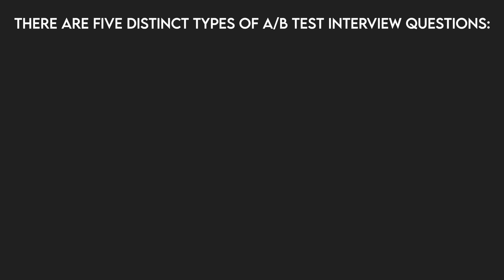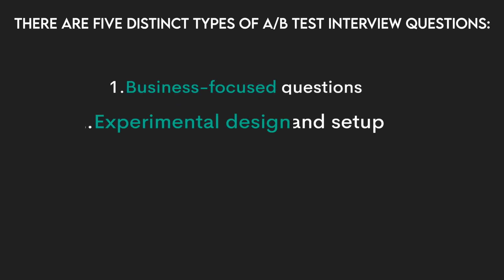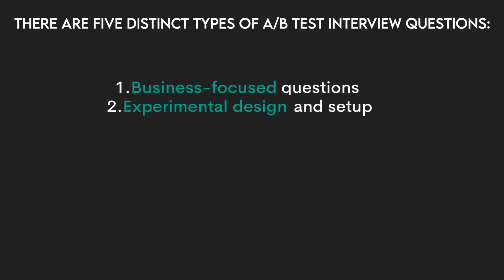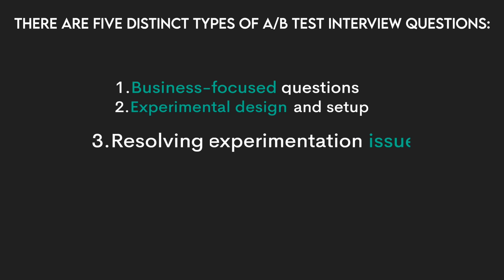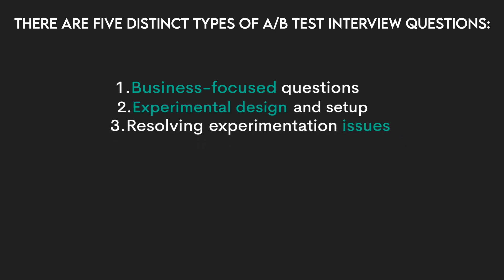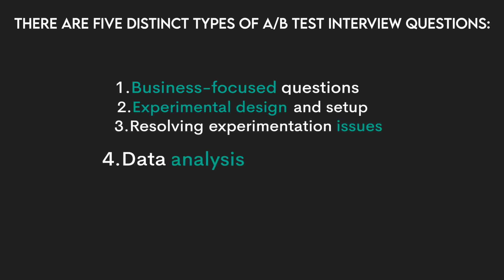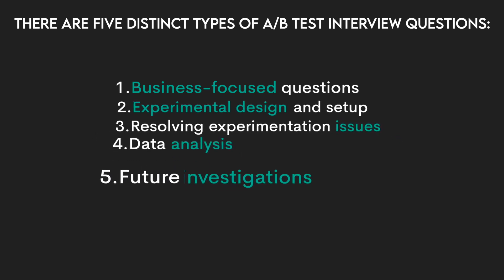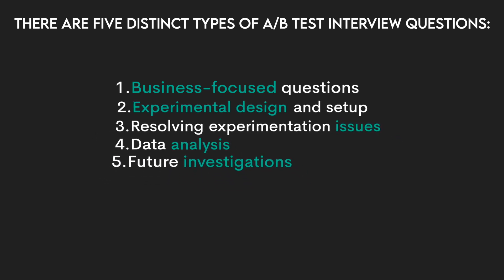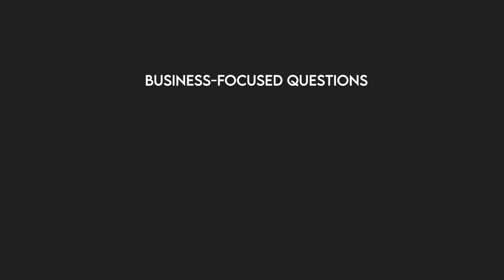There are five different types of A-B test interview questions: business focus questions, experimental design and setup, resolving experimentation issues, data analysis, and future investigations. Any of these five types can be asked in an interview, so let's go through an example of each type.